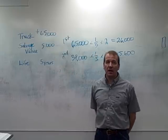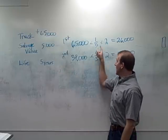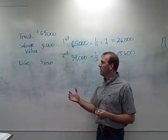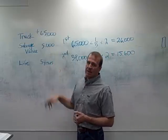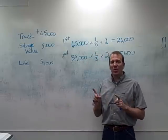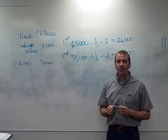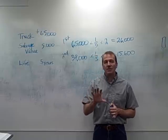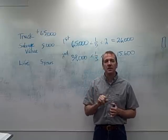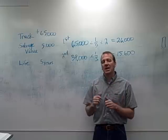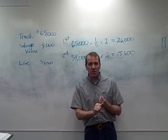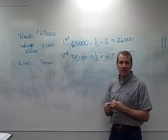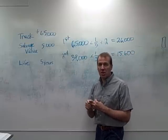You continue this process each year. In year five, whatever is left over, you depreciate it down to exactly the $5,000 salvage value — you don't just keep applying the 40% mechanically. The textbook has a really good example that goes through all the years showing how you arrive at that final year amount, so make sure you go through it carefully.